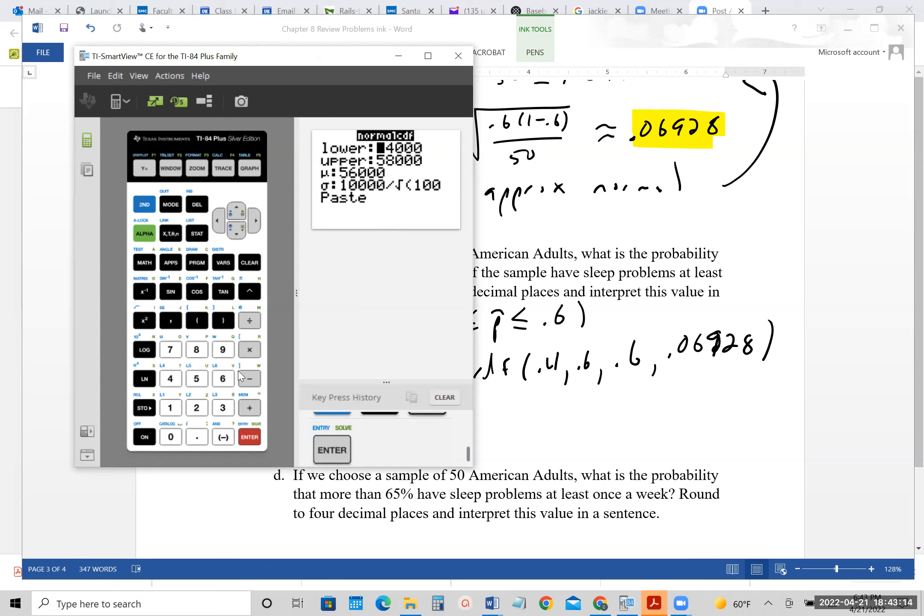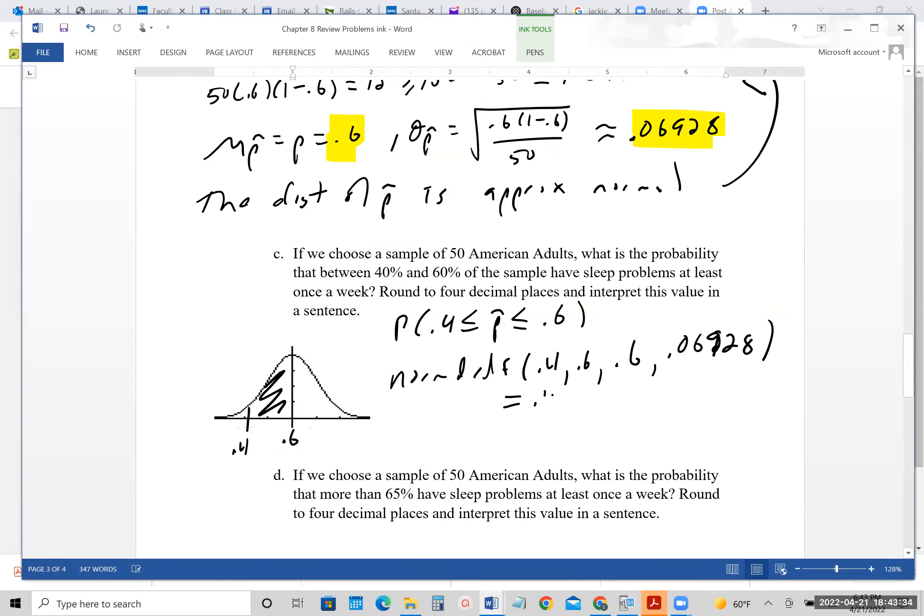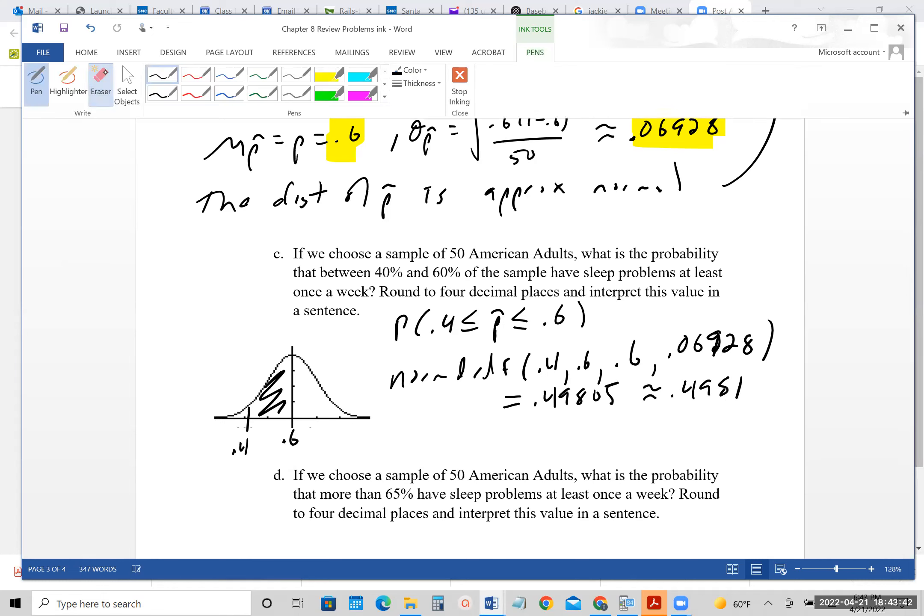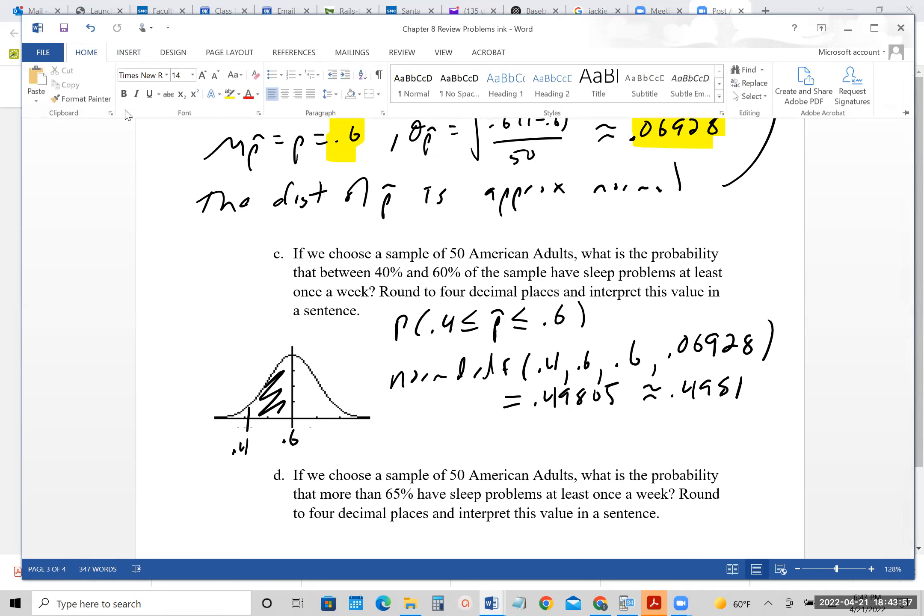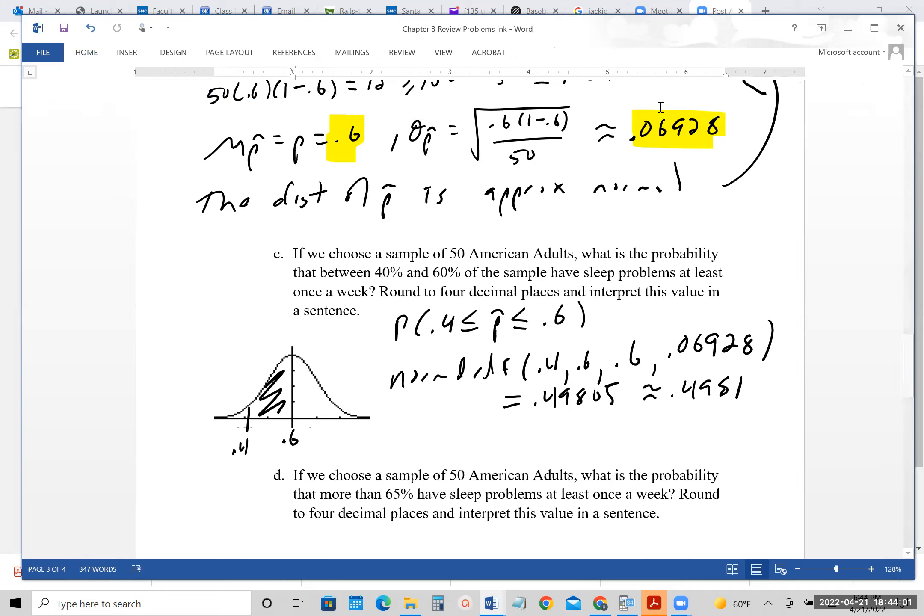So 0.4 is less than or equal to P hat is less than or equal to 0.6. So that would be normal CDF 0.4, 0.6, 0.6 because that's the mean, 0.06928. So you can see I got those values from the previous part. And we would do second VARs, come down to normal CDF, and we would just type in our numbers. And you can see I have my numbers in, and my final answer is 0.49805. So I would probably say roughly 0.4981, and that would be that.